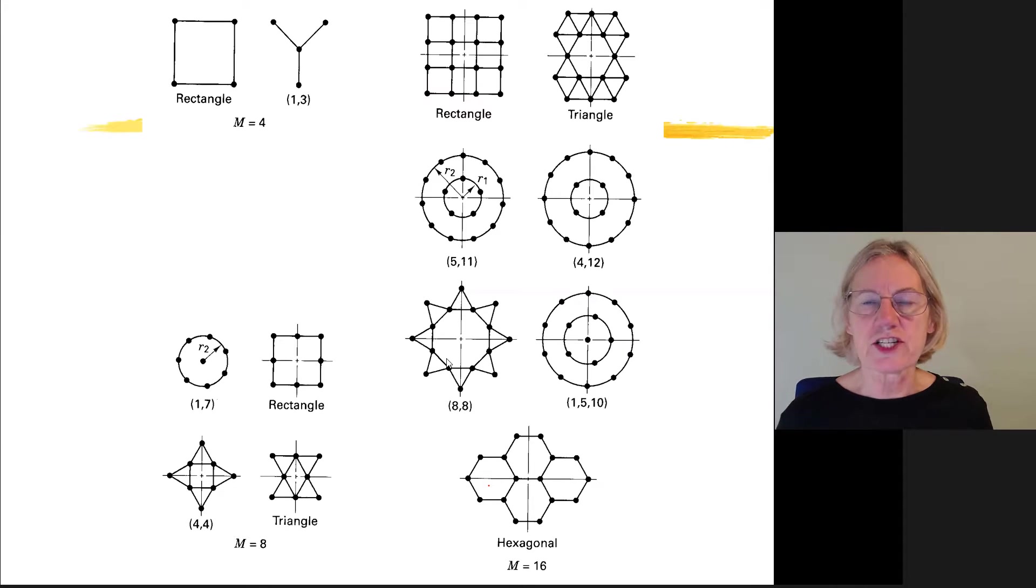So quadrature amplitude modulation. Basically in this formulation, we take the XY plane, the two-dimensional plane, and we just put points anywhere we want on it. We can change the amplitude, we can change the phase. For instance, if I take M equal 4, there's different geometries I can use that has four symbols in the constellation. I could use a rectangle like QPSK, but I could also do something that looks like this Y configuration. Rectangular, of course, very popular, and we'll be taking that example.